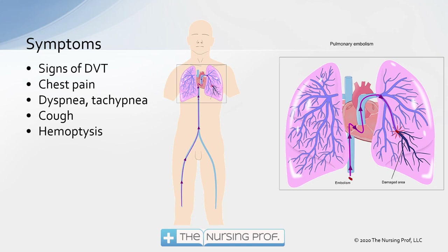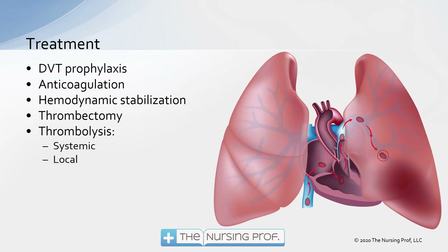Symptom-wise, we can anticipate looking for signs of a DVT — looking for those venous thromboemboli. Patients could be experiencing chest pain from the clot itself, from lung tissue damage, or from the blood backup causing stress on the heart. Dyspnea, tachypnea, cough, hemoptysis — and remember, the number one sign is going to be tachycardia.